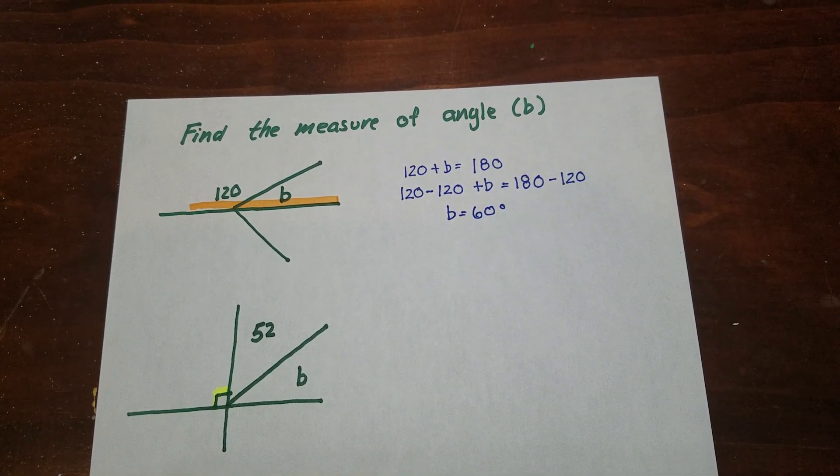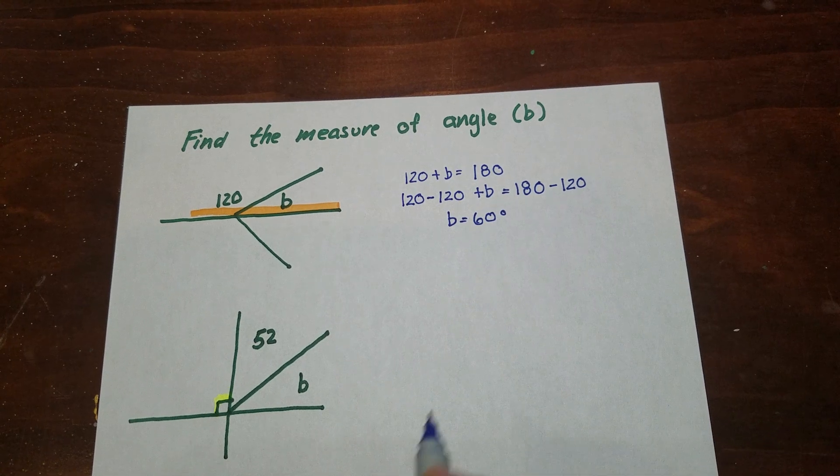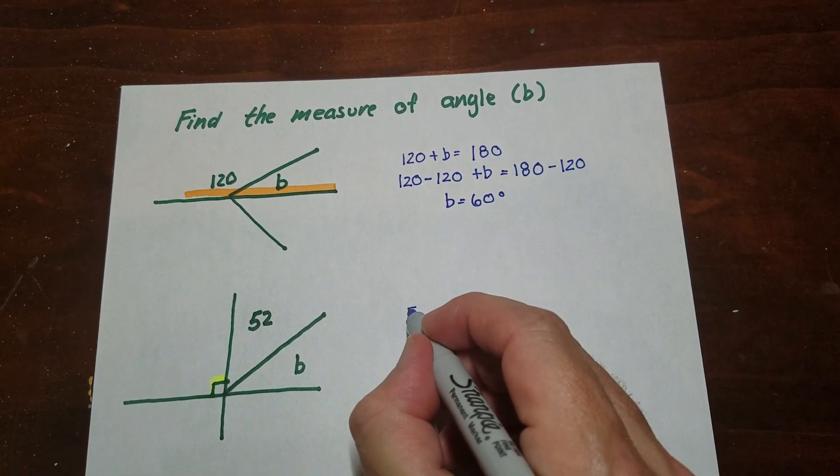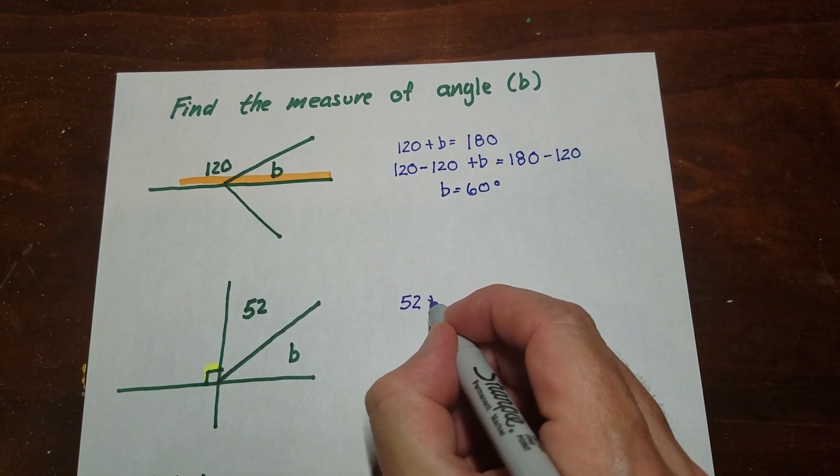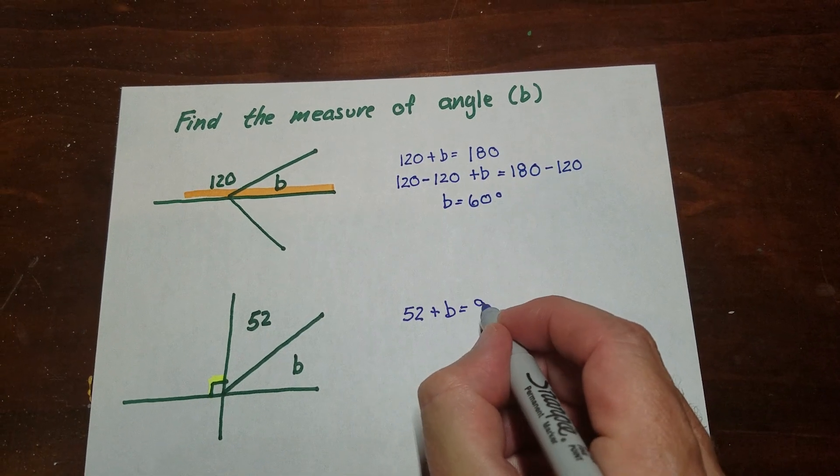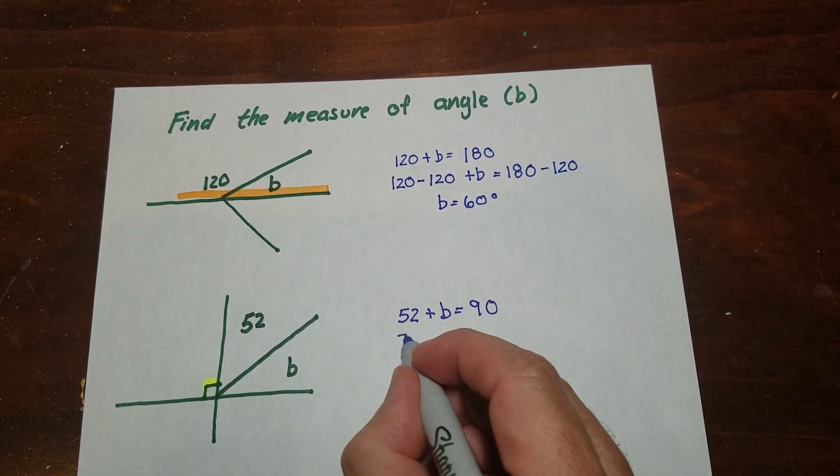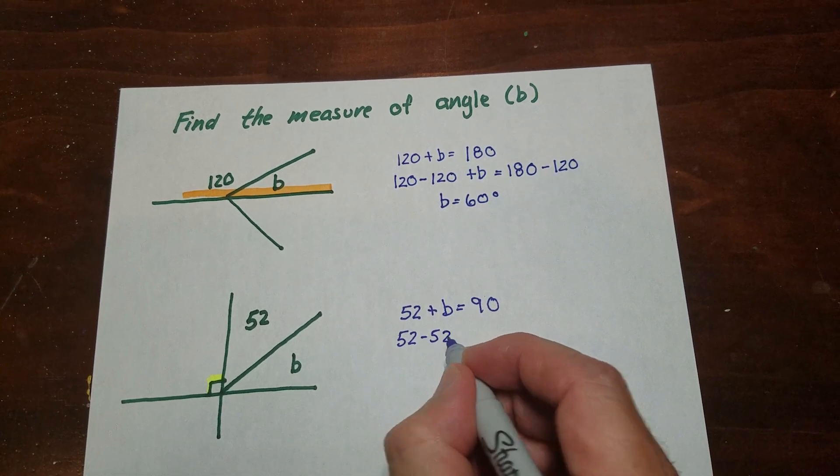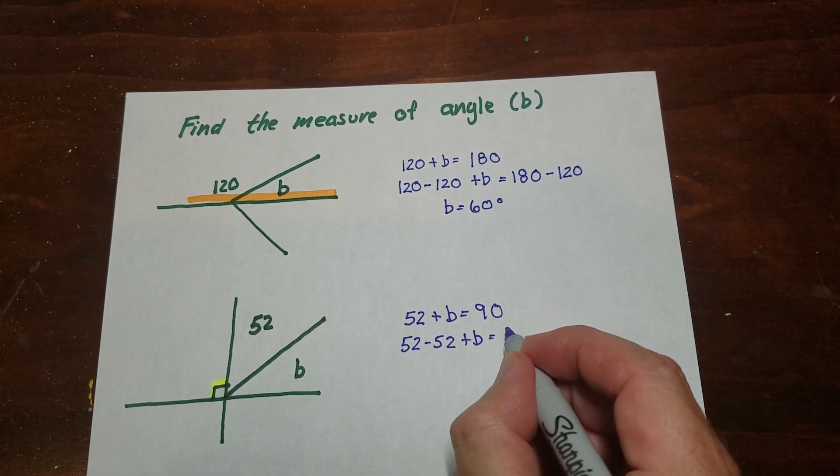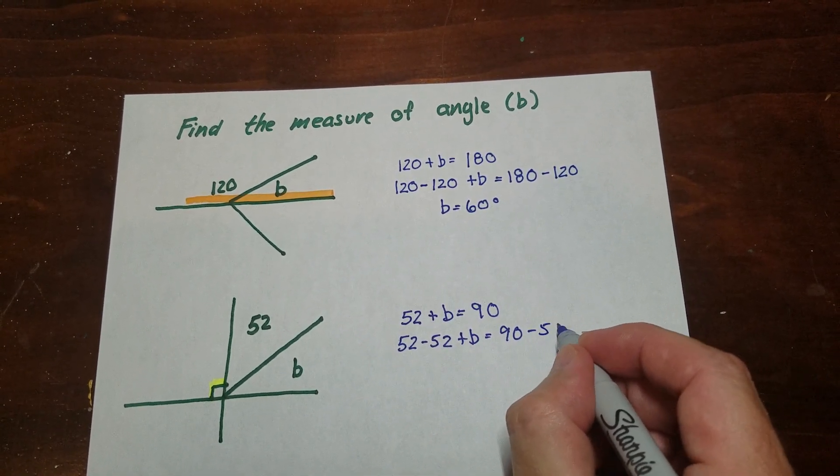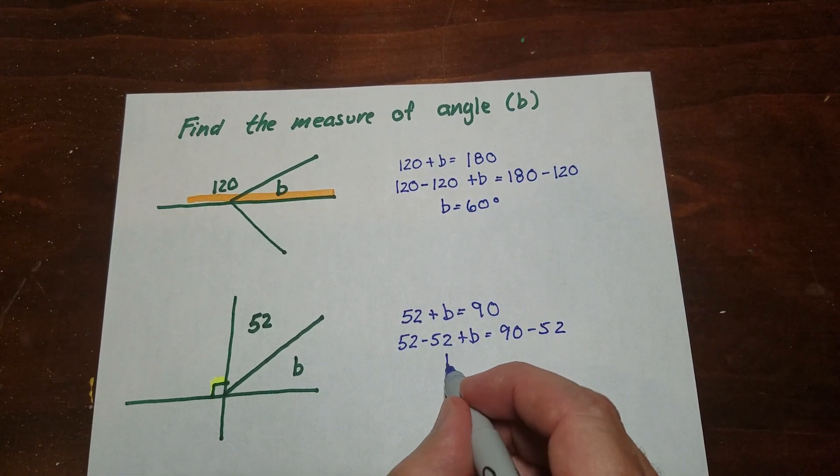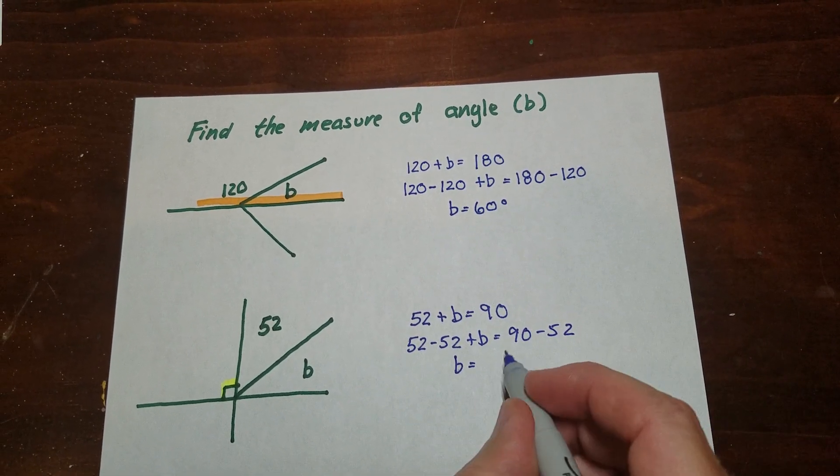So I know that this is a complementary type relationship. And since these two angles are complementary, my equation will now look like this. It'll add to 90. So again, subtraction property of equality. 38.